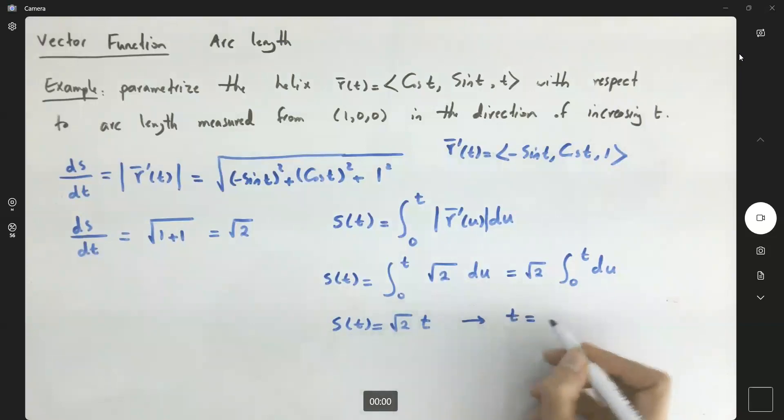So from this relation, t is equal to s, or s(t), divided by square root of 2.